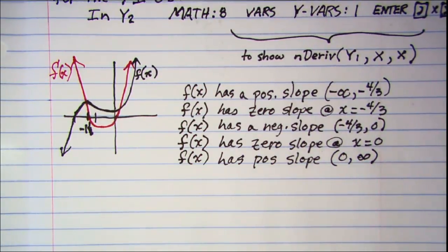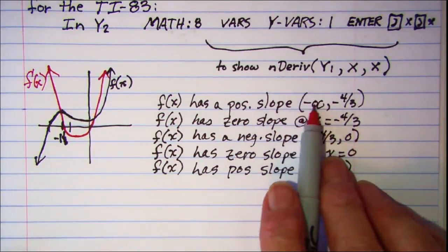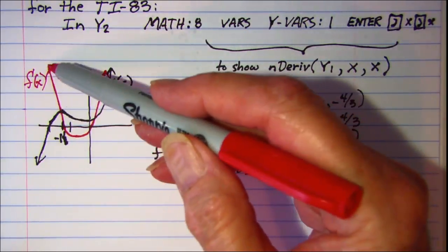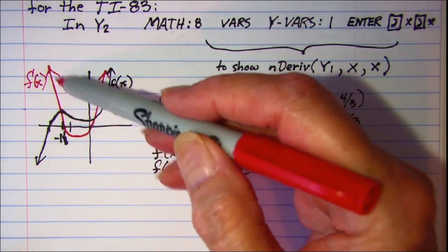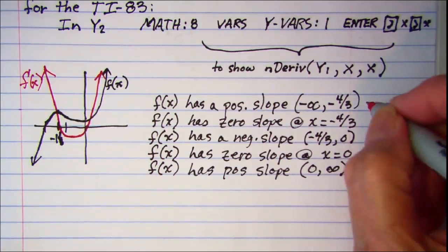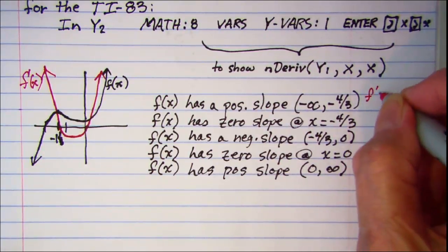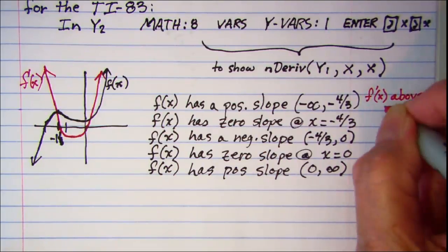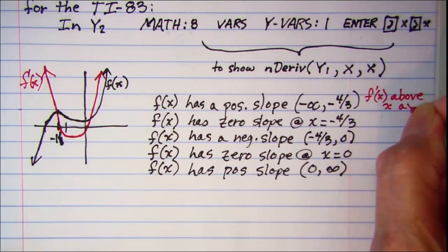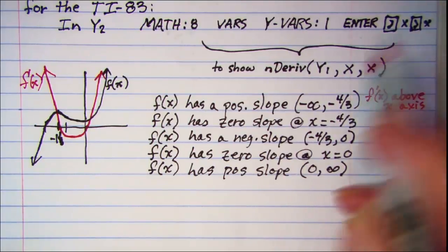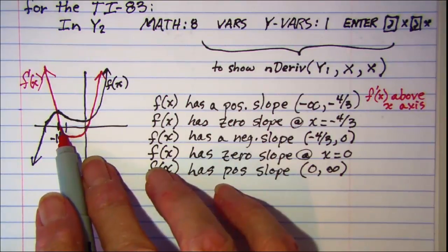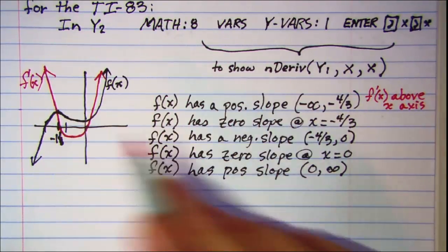Now let's look at our derivative graph. On the interval from negative infinity to negative 4 thirds, my derivative is above the axis. So f' above x axis. Then when x is equal to negative 4 thirds, my derivative crosses the x axis.